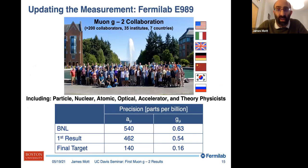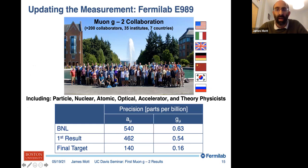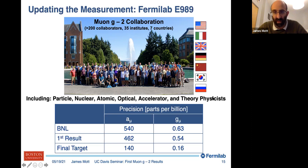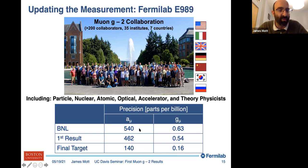The main aim of our experiment at Fermilab was to confirm or refute this Brookhaven result. The collaboration has about 200 people from 35 institutes in seven countries. We draw from many different areas of physics — particle, nuclear, accelerator, and theory. Our precision goals: Brookhaven was at 540 parts per billion, this first result is at 460 parts per billion — already better than Brookhaven. The final target is a factor of four further improvement, down to 140 parts per billion.